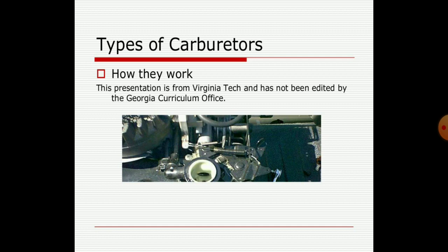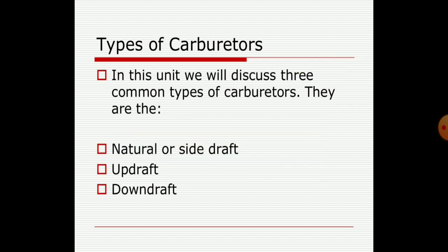According to design of engine there are basic types of carburetor. Today we will discuss the types of carburetor and how they work. There are mainly three common types: number one is natural or side draft carburetor, the second one is updraft, and the third one is downdraft carburetor. These are the three important types for the IC engine carburetor.